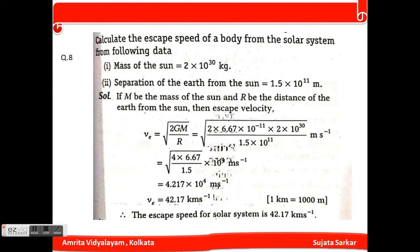Question number 8: Calculate the escape speed of a body from the solar system. Mass is given and separation of the earth from the sun is 1.5 × 10¹¹ meters. The equation is V equals square root of (2GM/R). We have to put the values and we will get 4.214 × 10⁴ meters per second, which is equivalent to 42.17 kilometers per second.